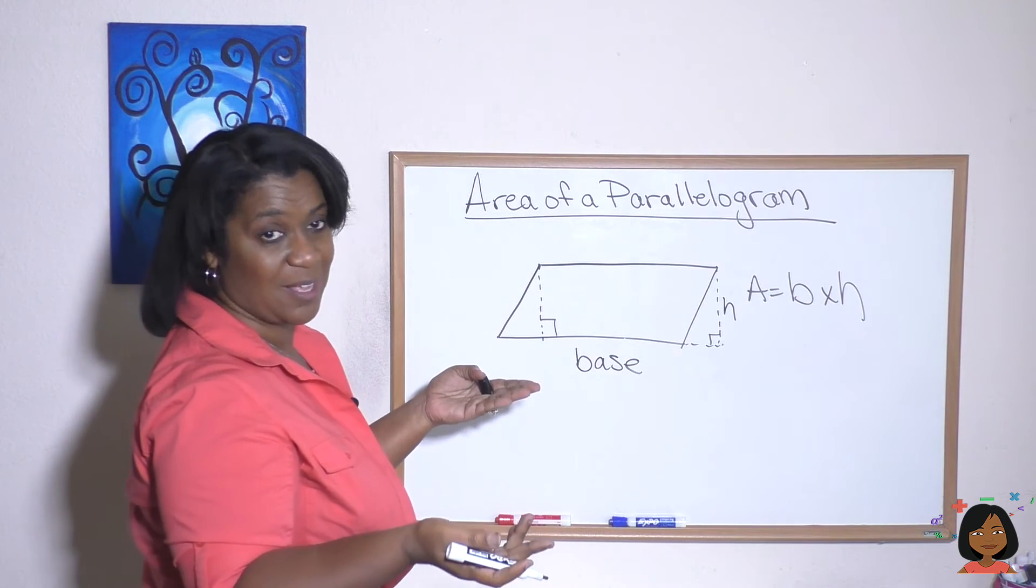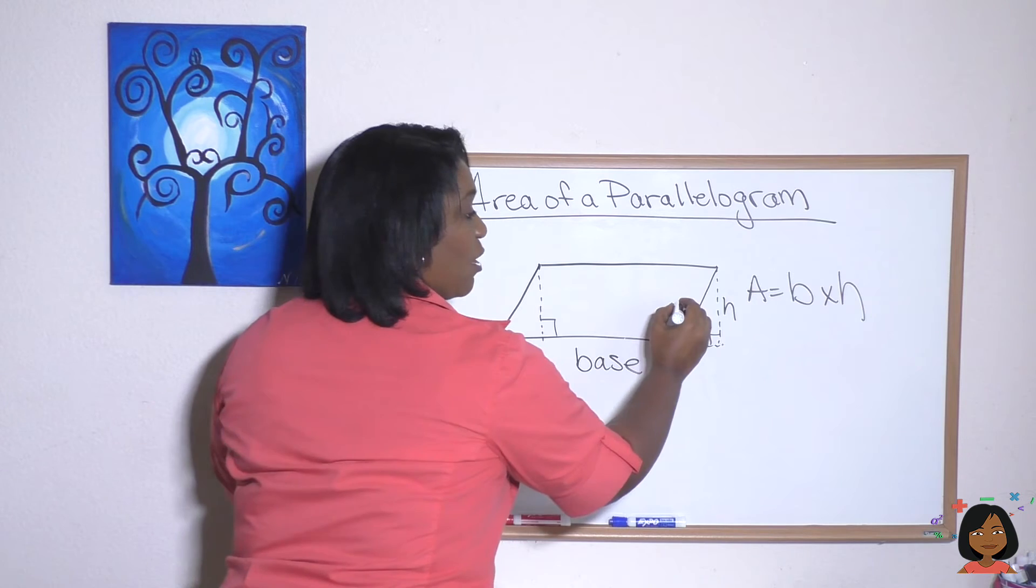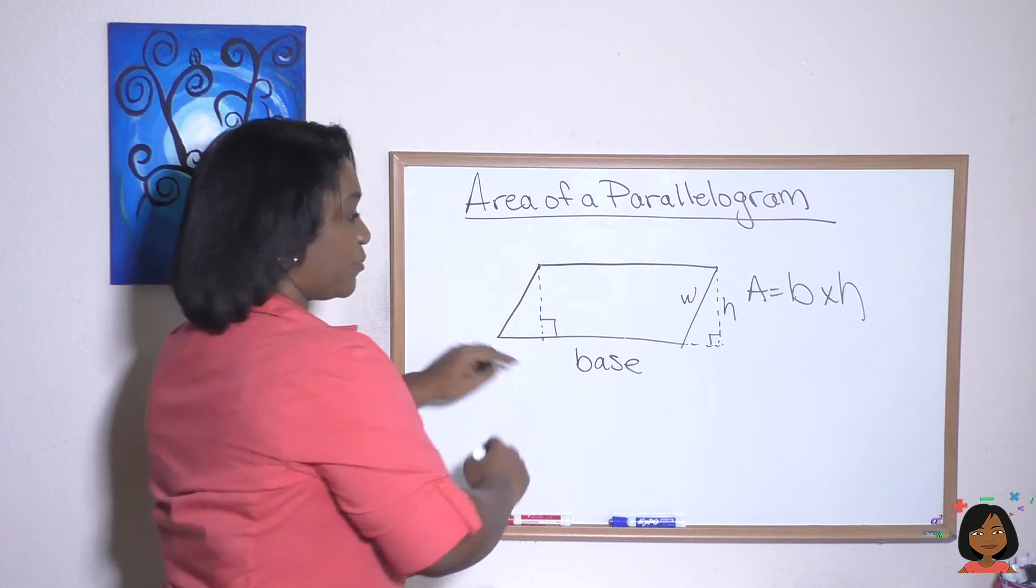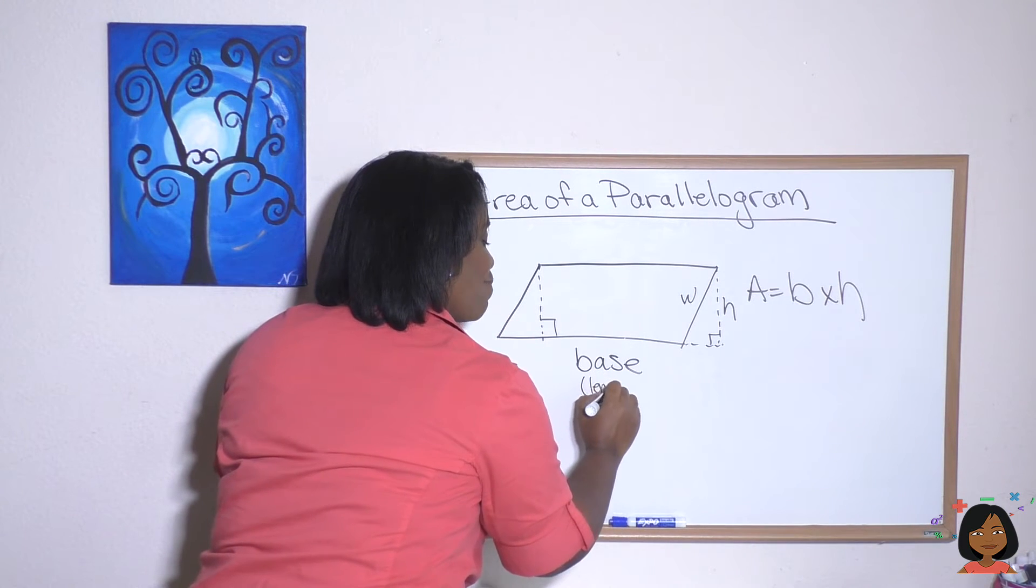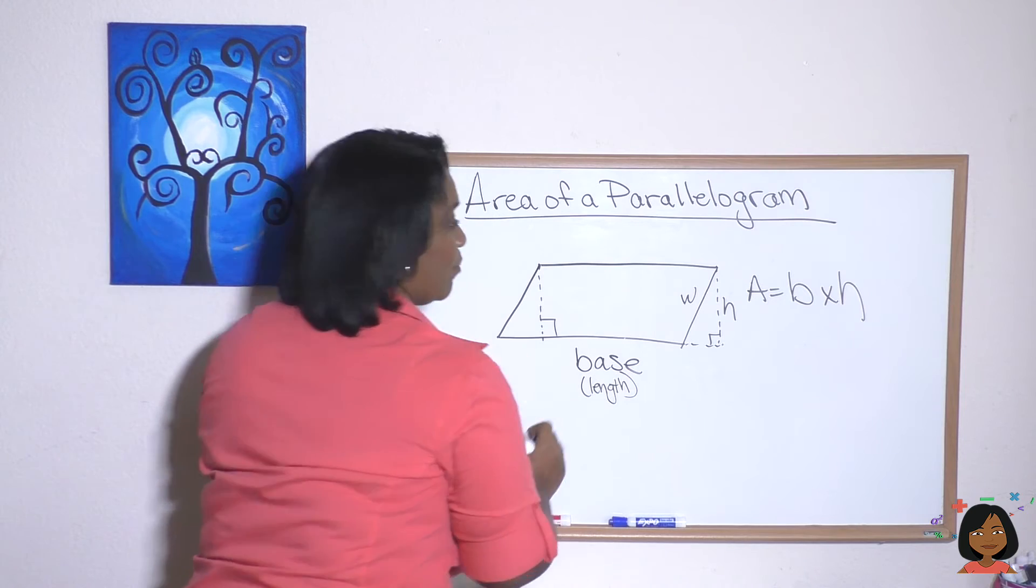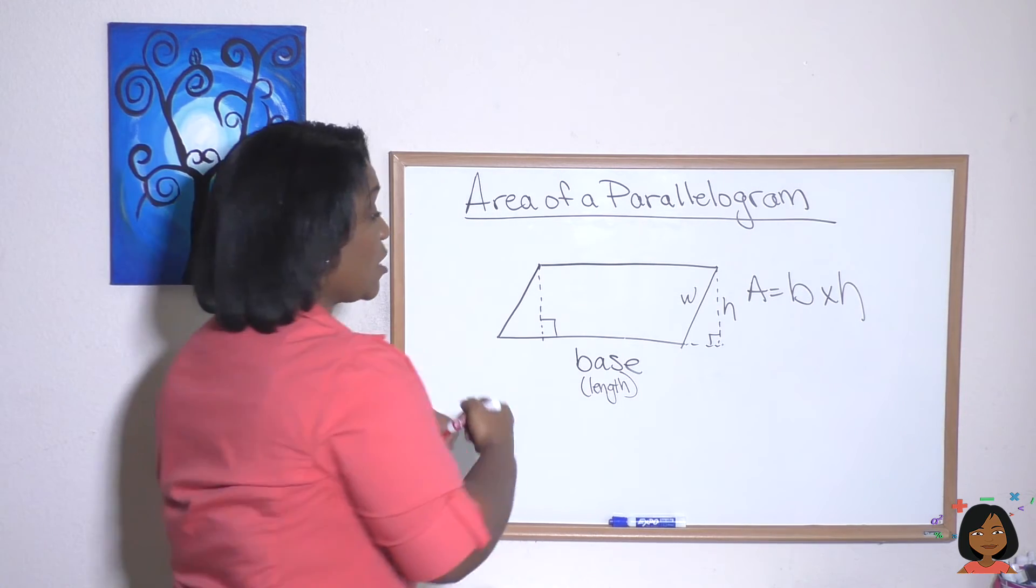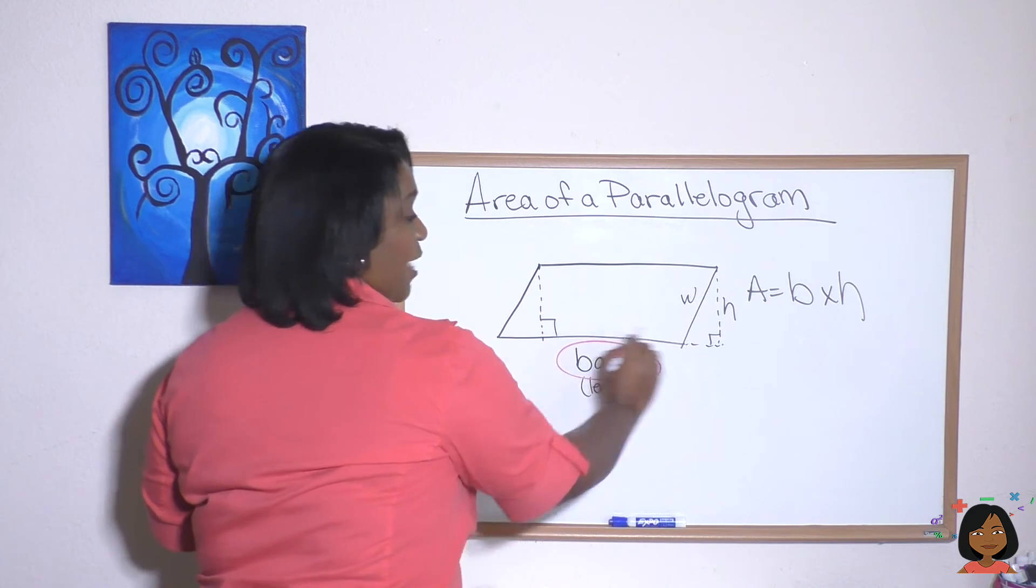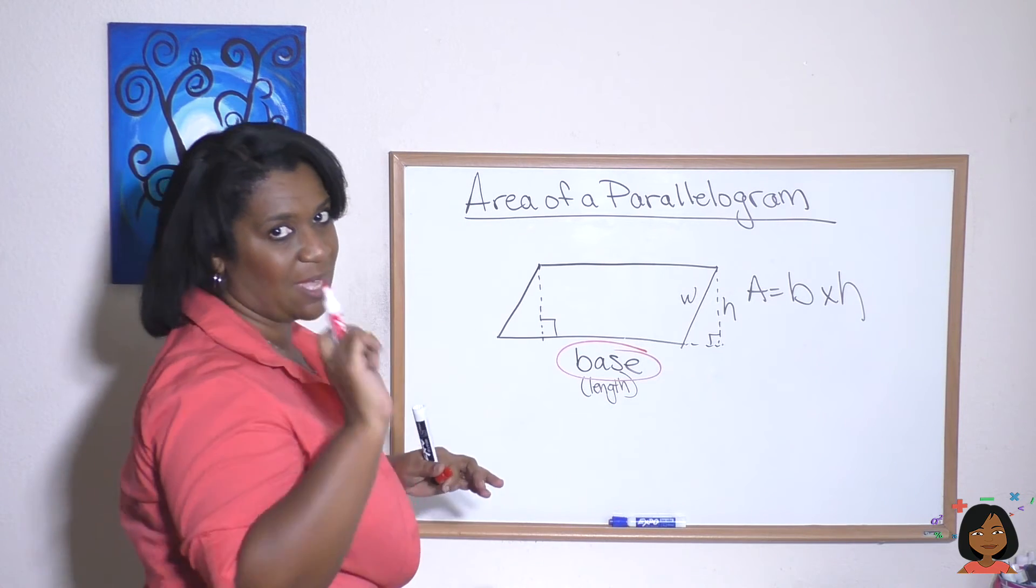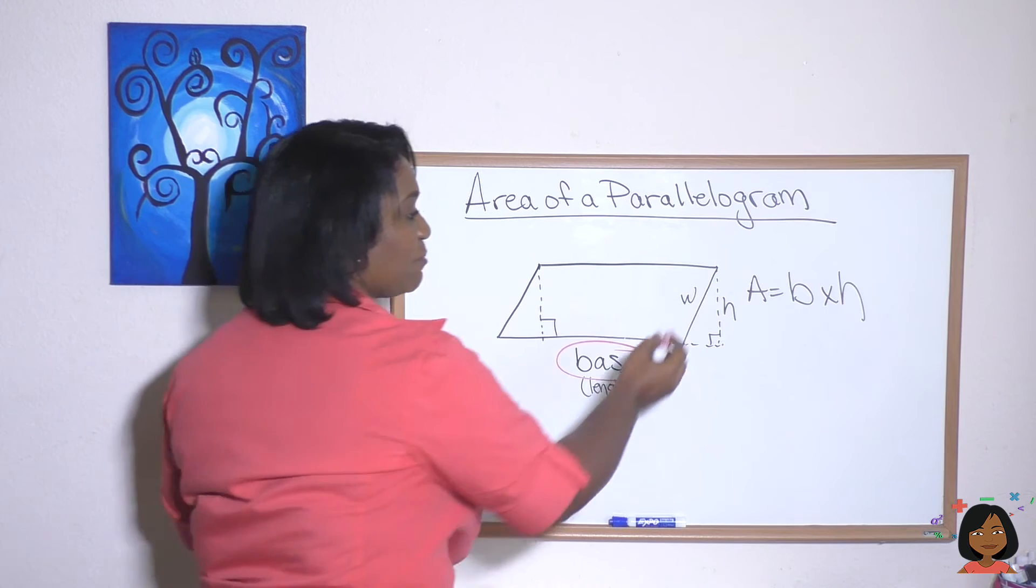You might be saying well what's this called? Well if it was a normal rectangle, we would have called this the length, we would have called this the width. I'm gonna write length here, width here. Because it's a parallelogram we just use different terms. We use base for that piece that it's sitting on, but the height is the key here. It has to be that 90 degrees.